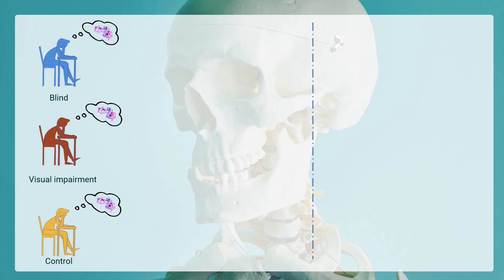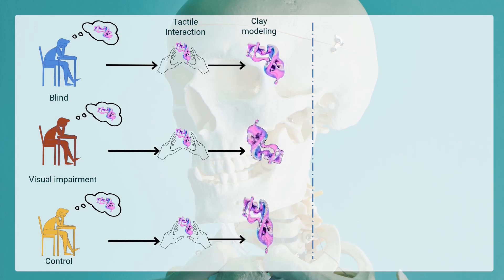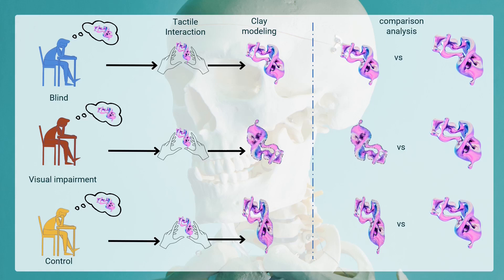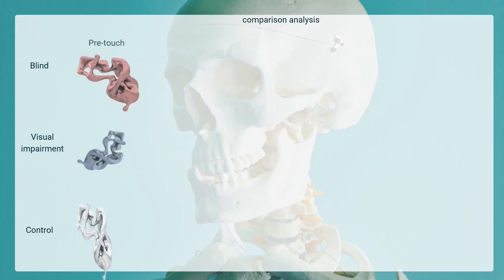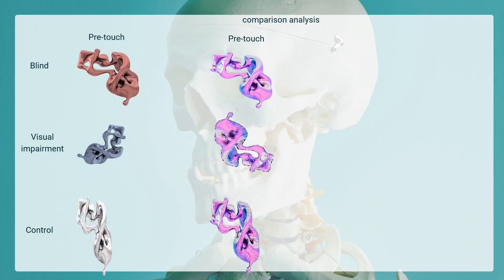In the second phase — the post-touch phase — students engage in direct tactile interaction with reference anatomical models, blindfolded to enhance their tactile perception. Afterwards, they again use clay modeling to reconstruct the structure. This time, our analysis focuses on a side-by-side comparison of these new clay models with the standard reference, determining the improvements in spatial understanding and memory retention facilitated by tactile experience.